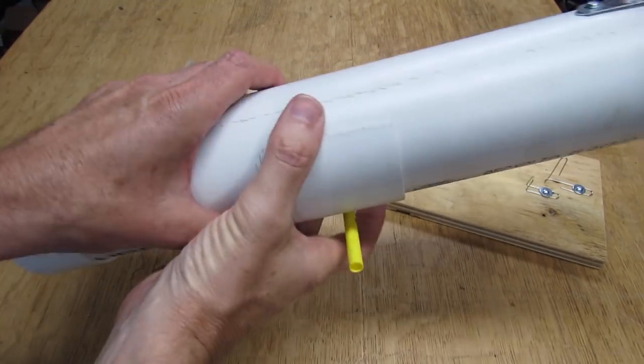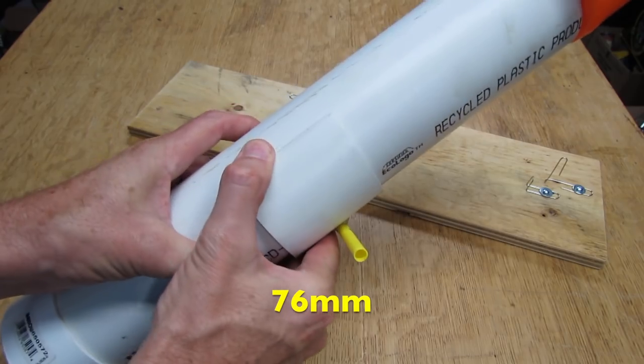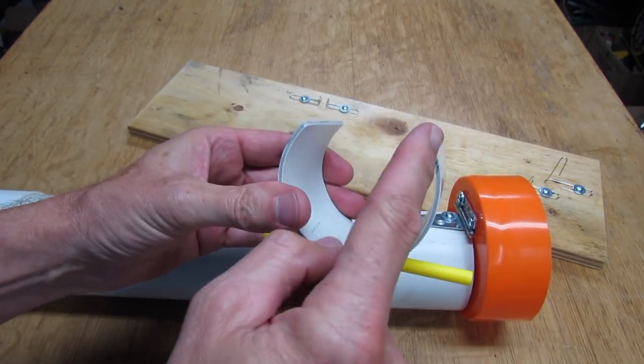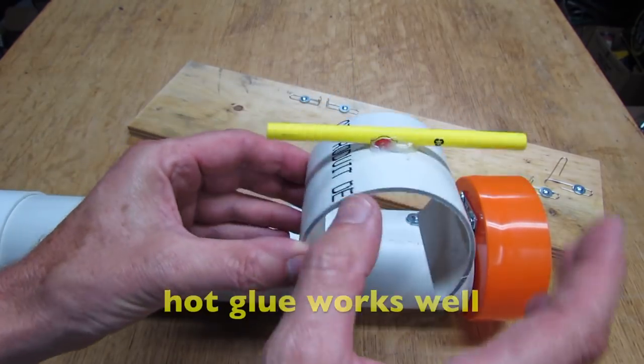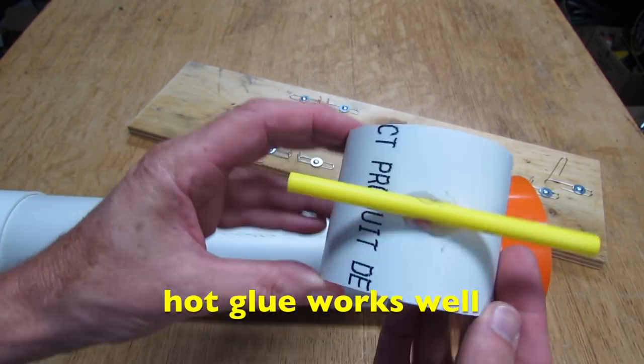This piece here that it pivots on is just a piece of PVC pipe and it's 3 inches wide. And all you do is cut out a quarter of the pipe and then glue a piece of the tubing from a ballpoint pen onto the back, right in the center.